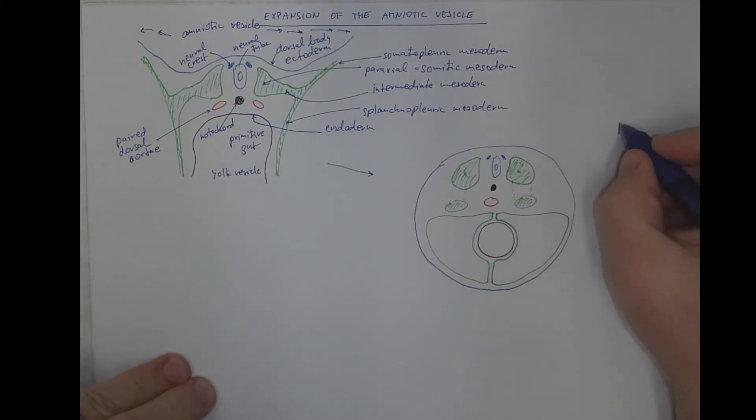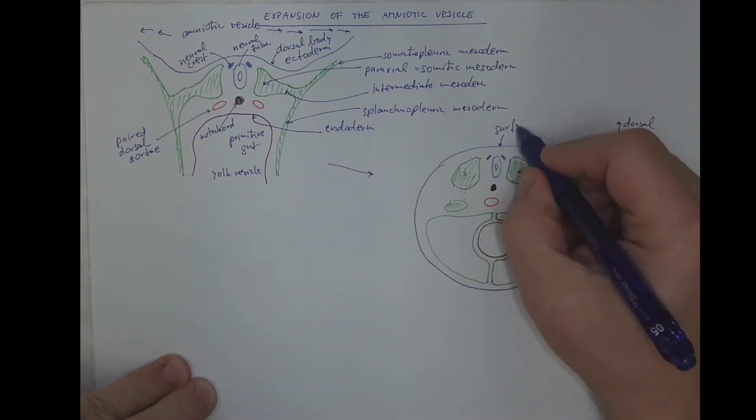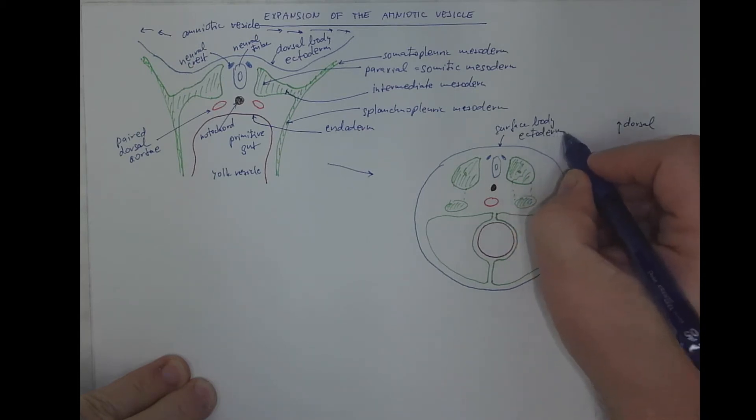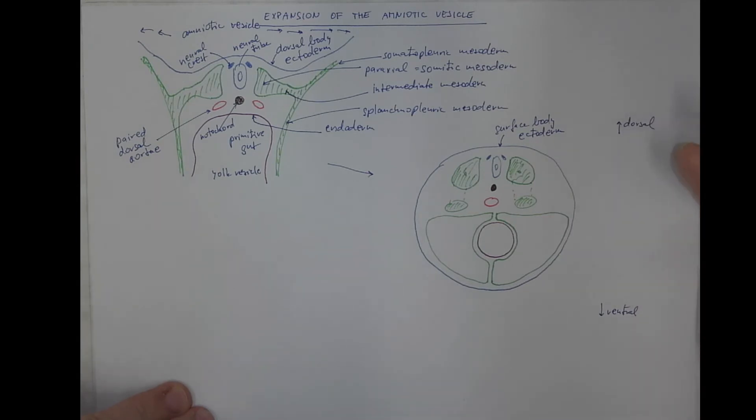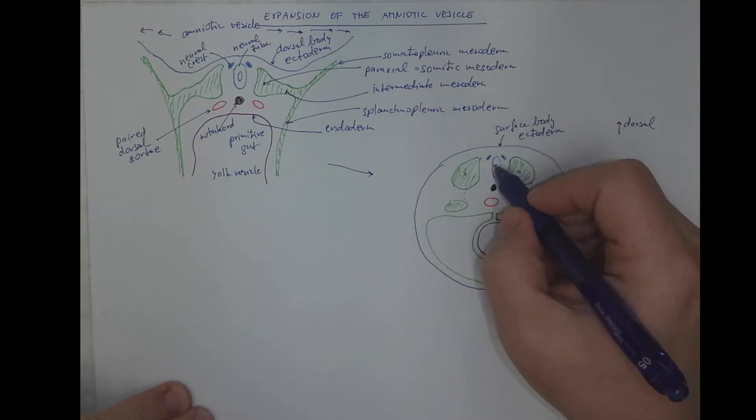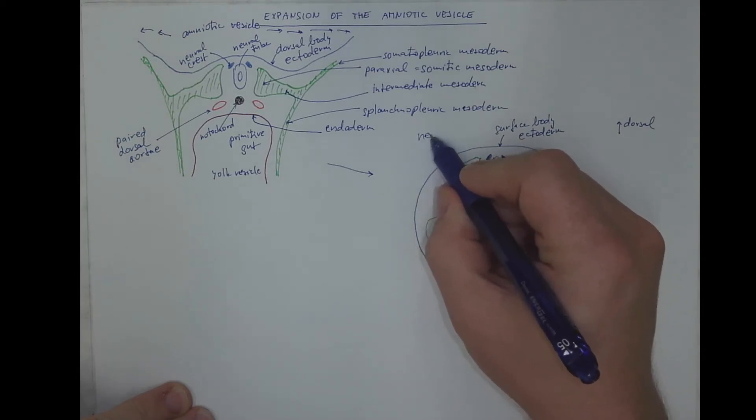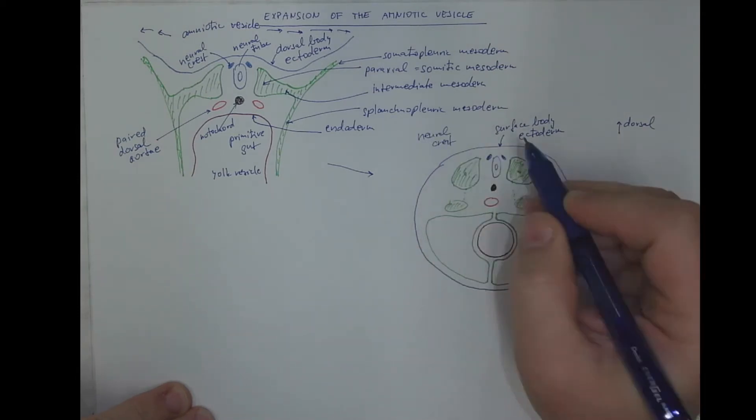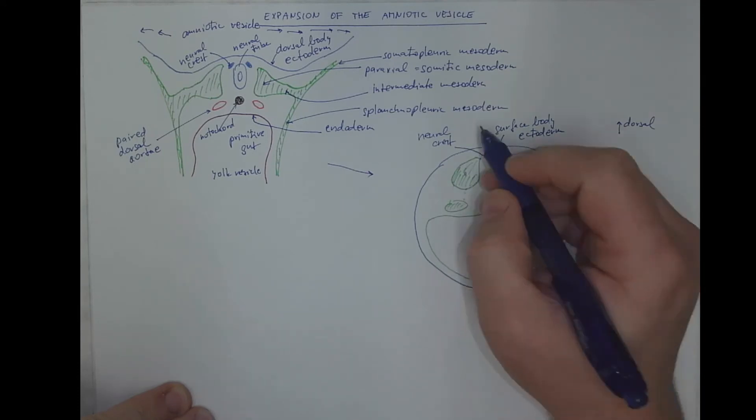So this is the dorsal direction. Here is ventral direction. This is the surface ectoderm, surface body ectoderm. That will form the epidermis later on. Its derivatives, namely the neural tube and neural crest.